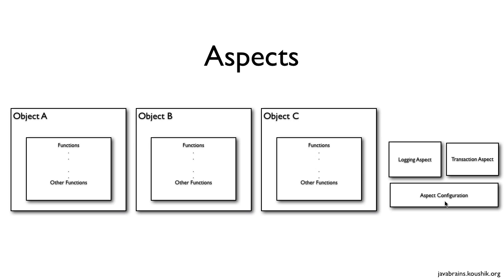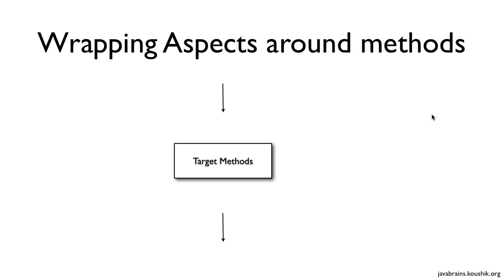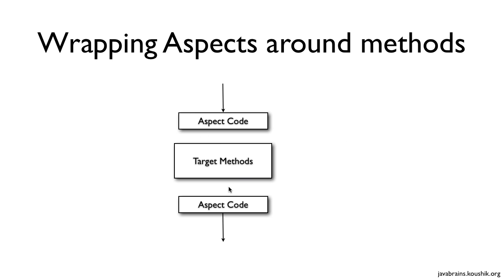This solves the problems noted earlier. If you want to make bulk changes, with just a few lines of aspect configuration you can have a particular aspect apply to a whole lot of methods across your application. Aspects get their true power by wrapping around your target methods — you can configure an aspect to run before and another to run after your target method, giving you a lot of flexibility. We'll look at all the different configurations in the next set of tutorials.